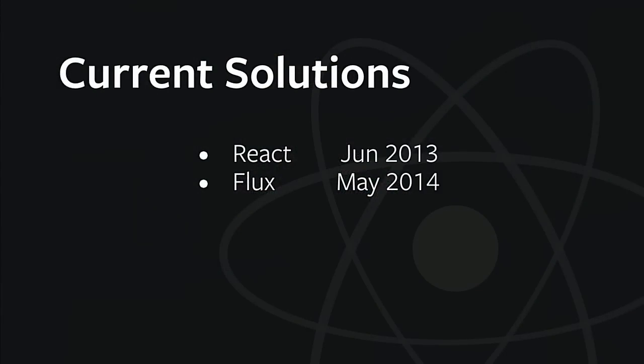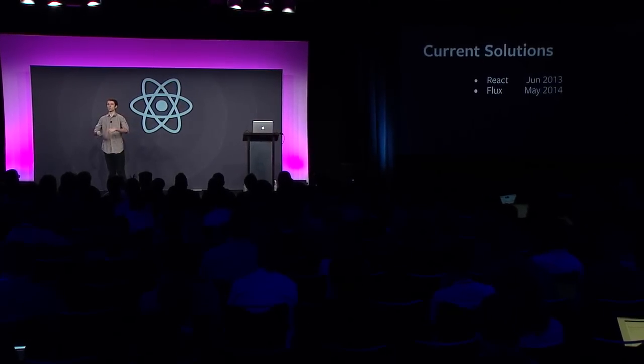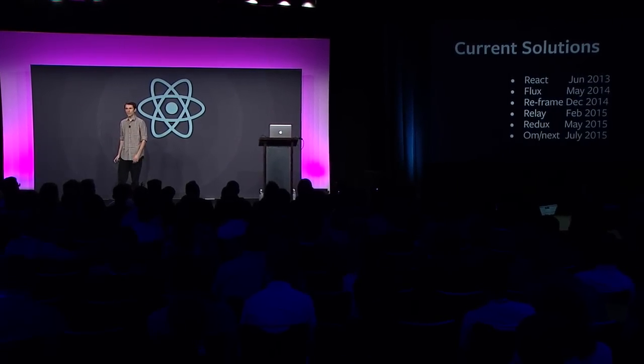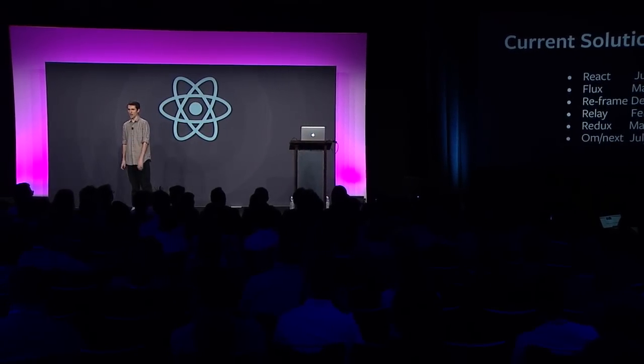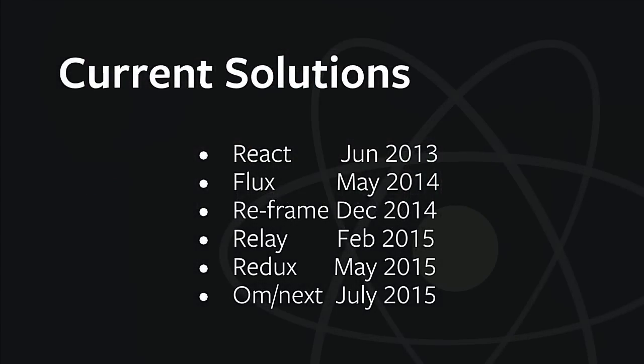React came out in 2013, three years ago. A year later, the React team talked about Flux, which was the solution — the way to do app state. It wasn't a library; it was a paradigm. And pretty much ever since then, there's been a rush of libraries and methods explaining how to manage app state. I'm going to talk mainly about Relay and Redux, with a couple of ClojureScript libraries thrown in for inspiration.